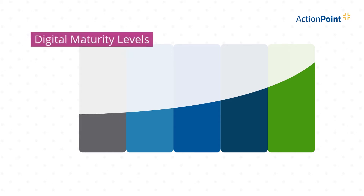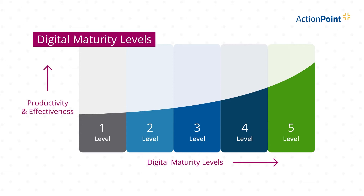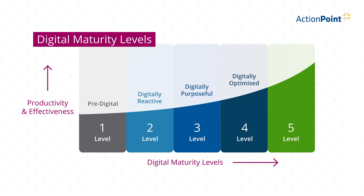There are five levels of Digital Maturity which are based on the overall score you receive after finishing your Digital Maturity Self-Assessment. The further along the scale, the more advanced your organization is in its digital journey. Every level up represents an increase in effectiveness, efficiency, and productivity, and we have attached descriptive labels to each level. These are: pre-digital, digitally reactive, digitally purposeful, digitally optimized, and digitally strategic.